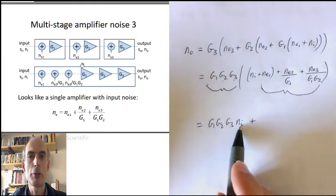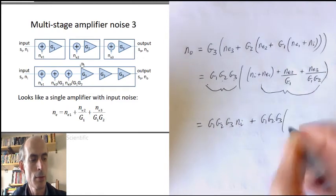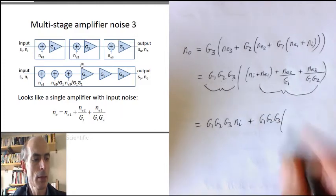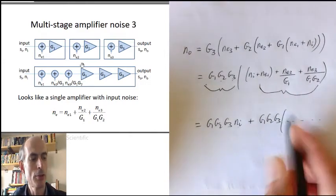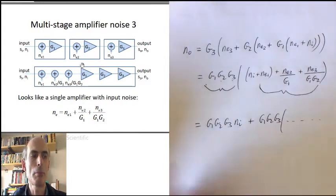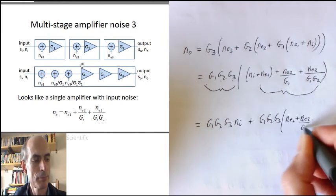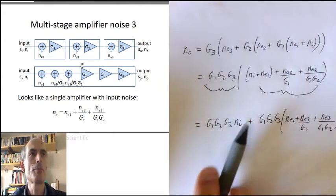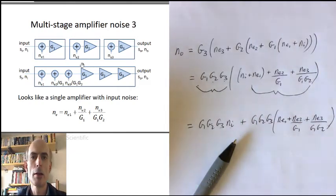That's the amplified up input noise. That's the total gain of the three stages of the amplifier taken together. And then whatever is in here must be the equivalent input noise of this multistage amplifier. It's just this. And that gives us a simple way to derive the equivalent input noise of a multiple stage amplifier.